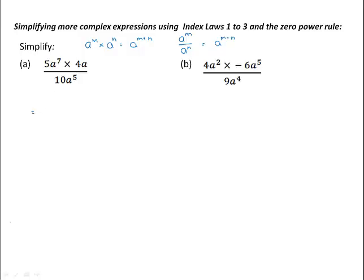If we look at this first expression, we can simplify the numerator as follows. 5 times 4 is 20, then a to the 7 times a would be a to the power 7 plus 1, or a to the power 8. And we divide that by 10, a to the power 5.